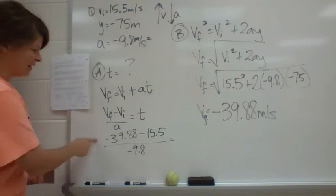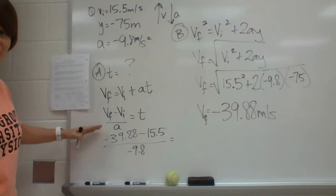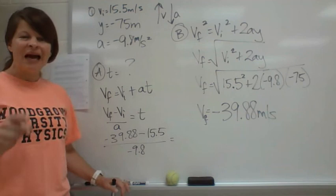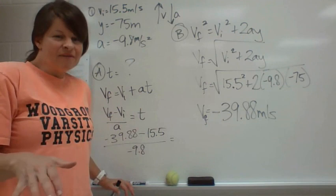That's great, because if I have a negative number on top divided by a negative number on the bottom, that makes sense, because time is going to come out positive. And that's really important because time is never negative. You can't go back in time. So the answer on this comes out to be 5.65 seconds.